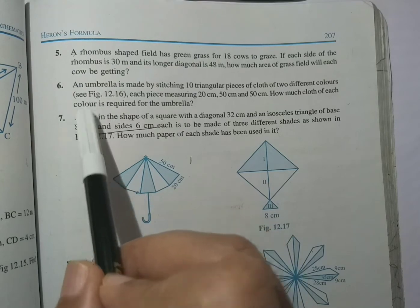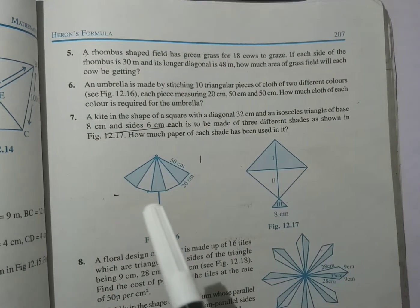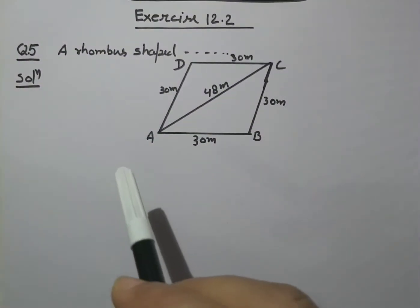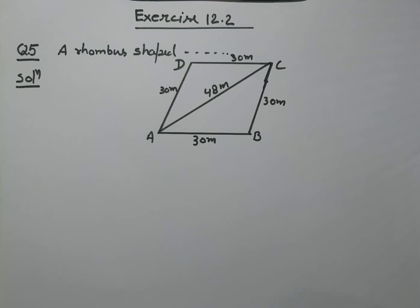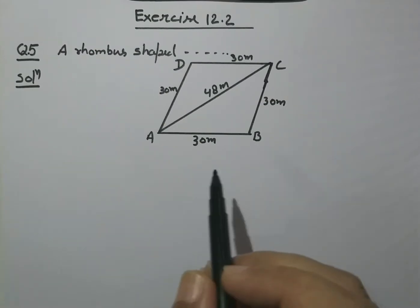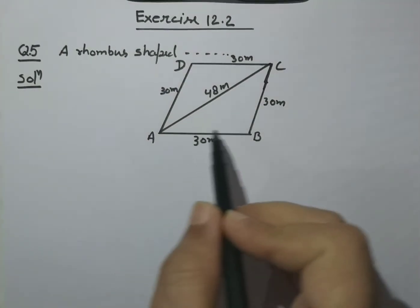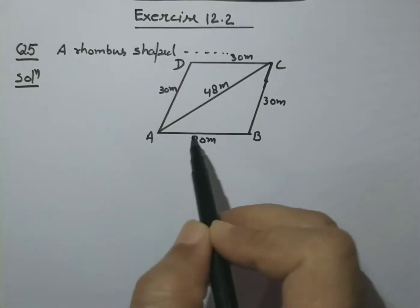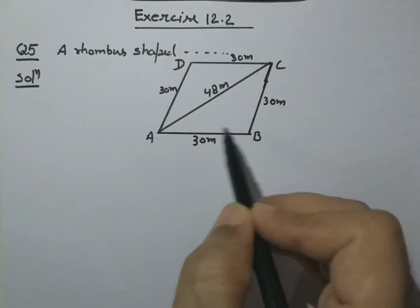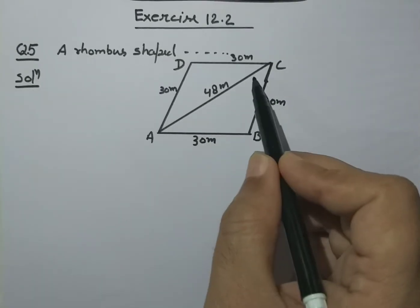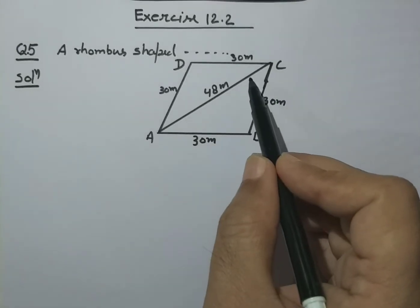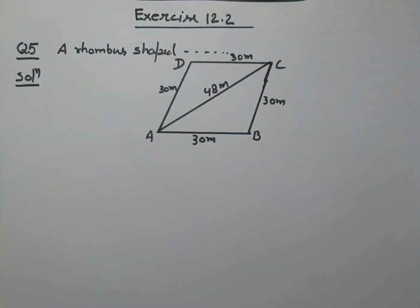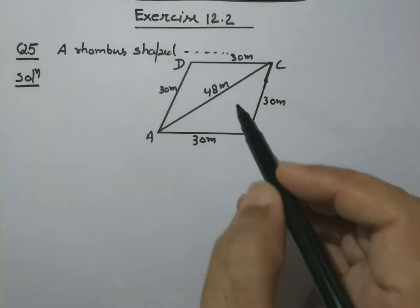So children, we will build a rhombus here. We have made a diagram of ABCD — a rhombus which has side 30 meters and its longer diagonal is 48 meters. Children, we know Heron's formula, so we will use that.